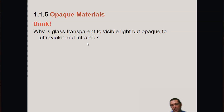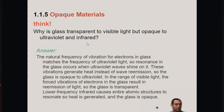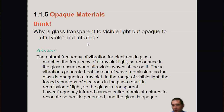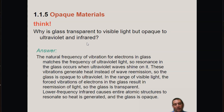Why is glass transparent to visible light, but opaque to ultraviolet and infrared light? The natural frequency of vibration for electrons in glass matches the frequency of ultraviolet light, so resonance in the glass occurs when ultraviolet waves shine on it. These vibrations generate heat instead of wave re-emission, so the glass is opaque to ultraviolet. In the range of visible light, the forced vibrations of electrons in the glass result in re-emission of light, so the glass is transparent. Lower frequency infrared causes entire atomic structures to resonate, so heat is generated and the glass is opaque.